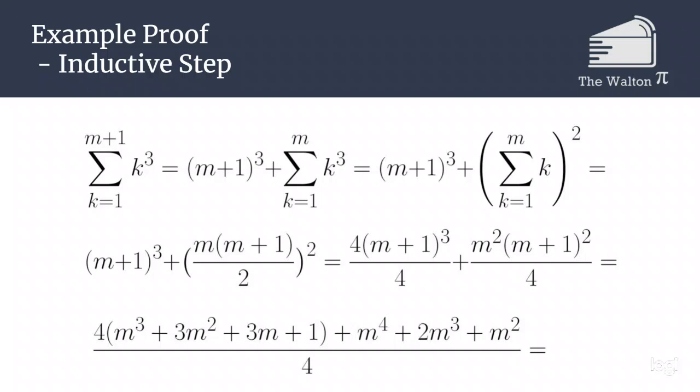Because we are now going to be dealing with fractions that are over 4, we can convert the m plus 1 cubed to 4 times m plus 1 cubed all over 4, so we have a common denominator when we add that to m squared times m plus 1 squared all over 4.